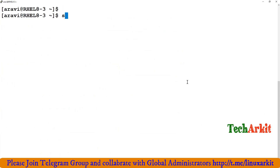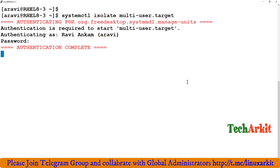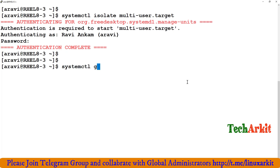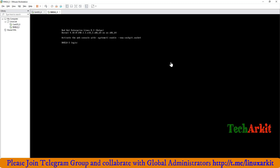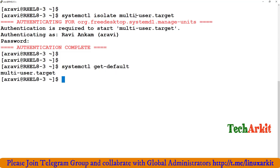To switch to multi-user target without rebooting, use: systemctl isolate multi-user.target. Enter the root password and the system switches to multi-user mode. To switch back from multi-user to graphical without rebooting, run: systemctl set-default graphical.target, or you can also use run level 5 target.